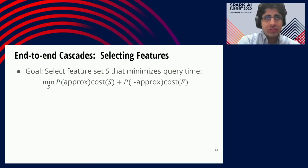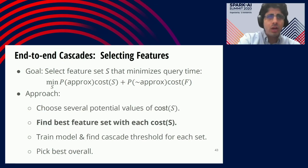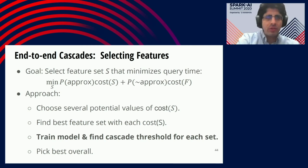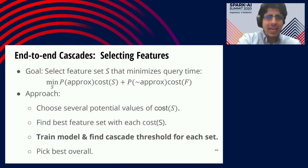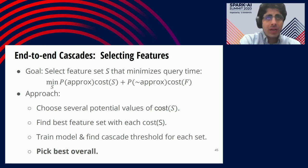We want to construct Cascades from the set of features that minimizes expected query time. Here's how we do it: first, we choose several potential feature costs. Then we find the best set of features at each of those costs. Next, we figure out which set performs best overall by training an approximate model and finding a cascade threshold for each feature set. We then compute the expected query time for each set of features and construct Cascades from the set that minimizes expected query time.